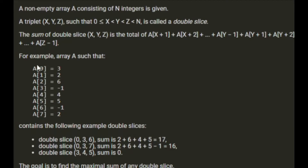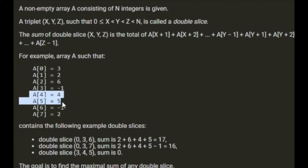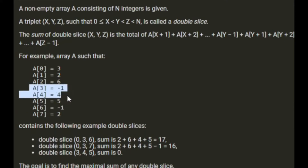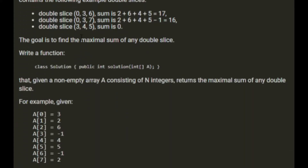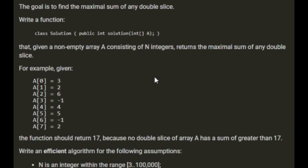Double slice (0, 3, 7) gives us 2, 6 plus 4, 5 minus 1, which is 16. Double slice (3, 4, 5) has nothing in between any of these, so the sum is 0. The goal is to find the maximum sum of any double slice. Given a non-empty array A of n integers, return the maximum sum of any double slice — in this example, that should return 17.